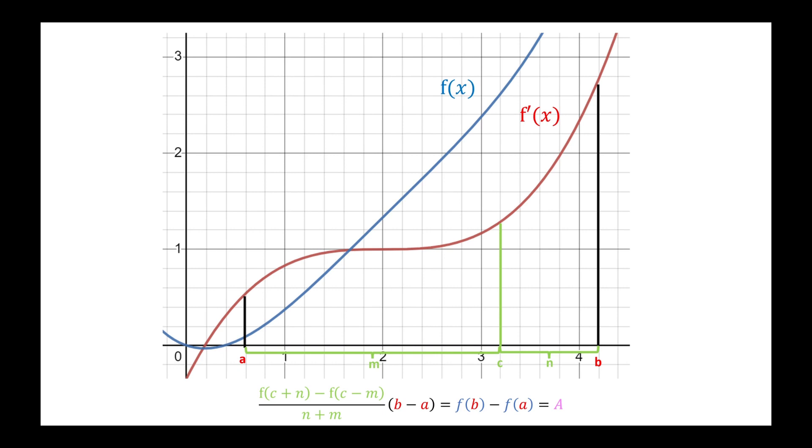And we actually have the tools to find exactly where c is. If we remember the definition of derivatives, we can simply take m to be this distance here and n to be this distance here. Therefore, n plus m is the same as b minus a.